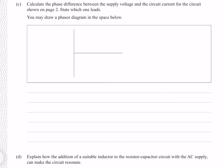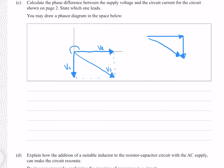Calculate the phase difference between the supply voltage and the circuit current, and state which one leads. In our phasor diagram, the resistor voltage goes along horizontally and the capacitor voltage always goes downwards. The supply voltage is the vector sum of VR and VC. Our vectors rotate counterclockwise, and because VR is in phase with the current, the supply voltage is lagging the circuit current — the current leads. The phase angle forms a right-angled triangle with VR and VS, so we use SOHCAHTOA.